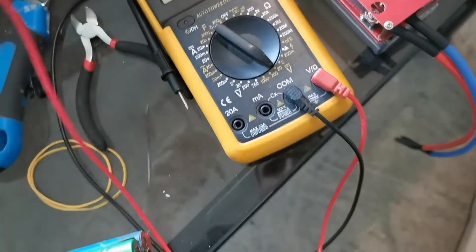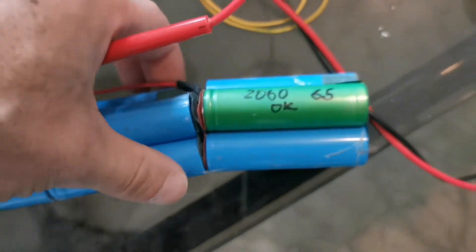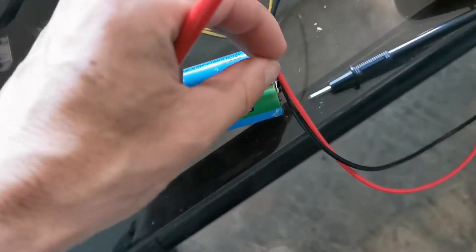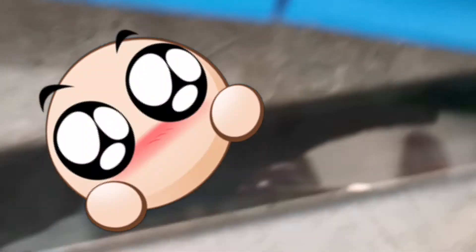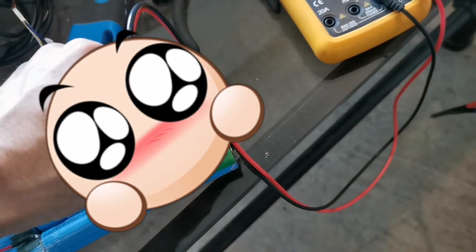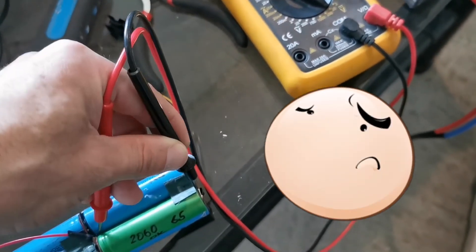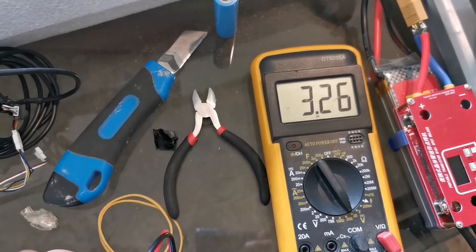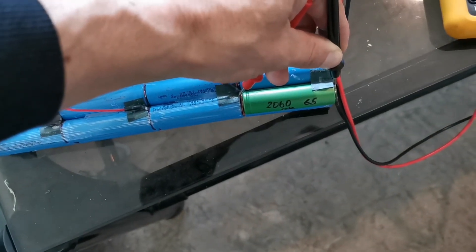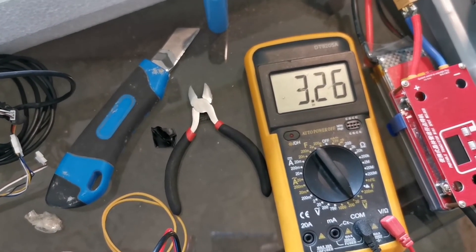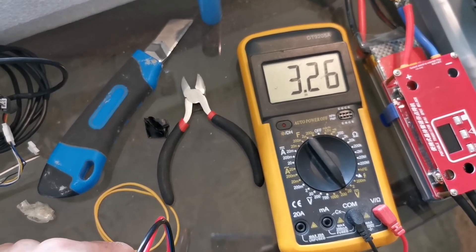And now as you can see, 3.2 volts because one had 2.4 volts and the other one, the new one that I put, was 3.6.